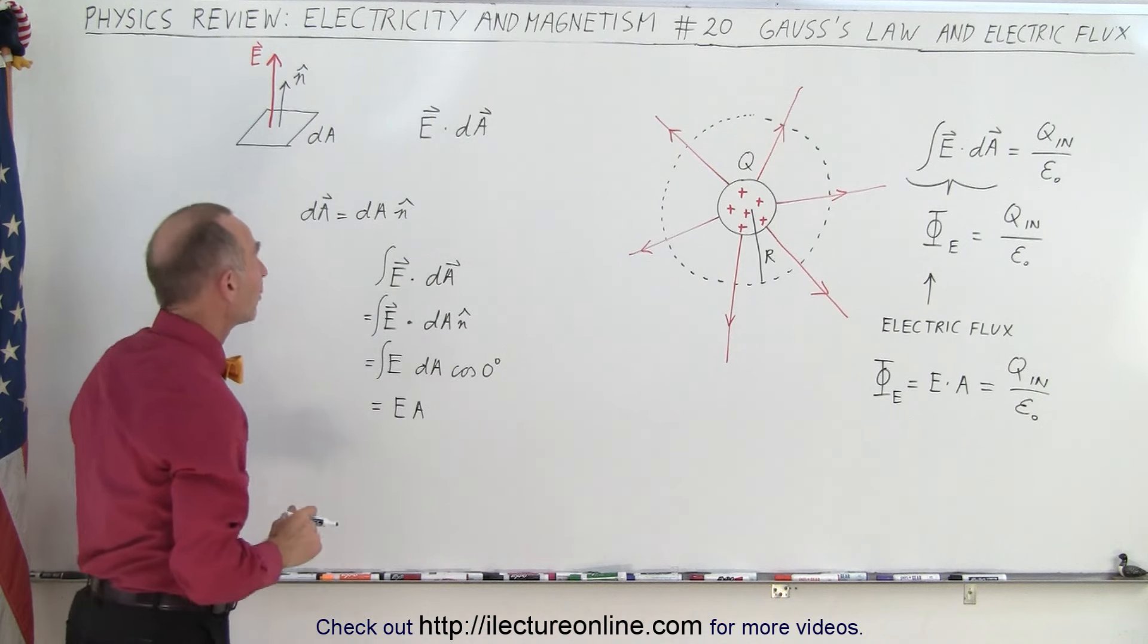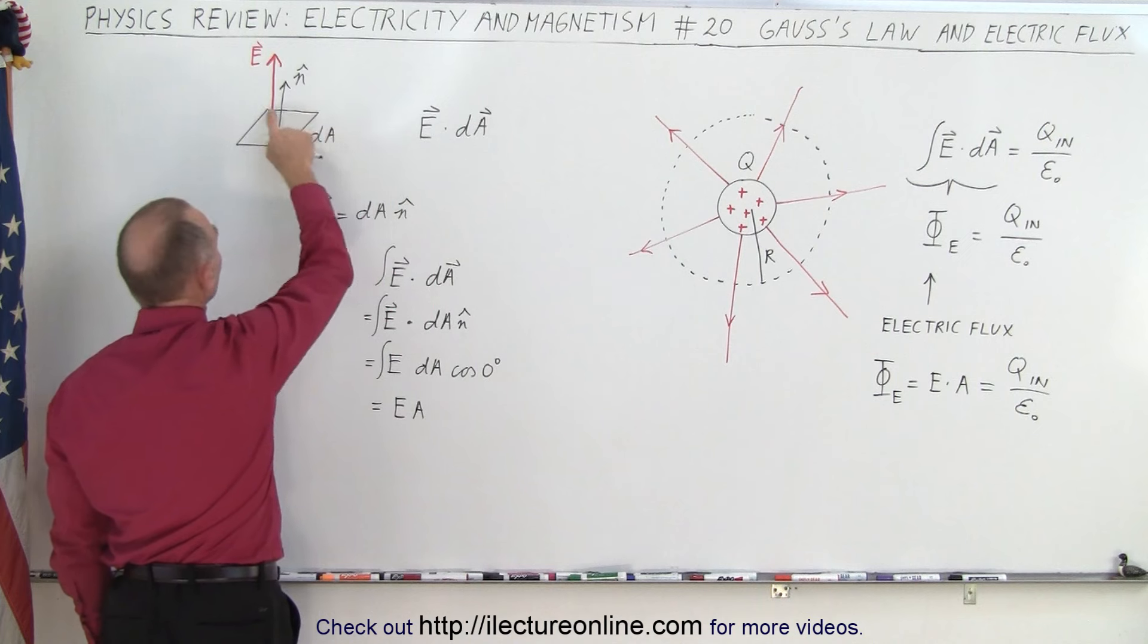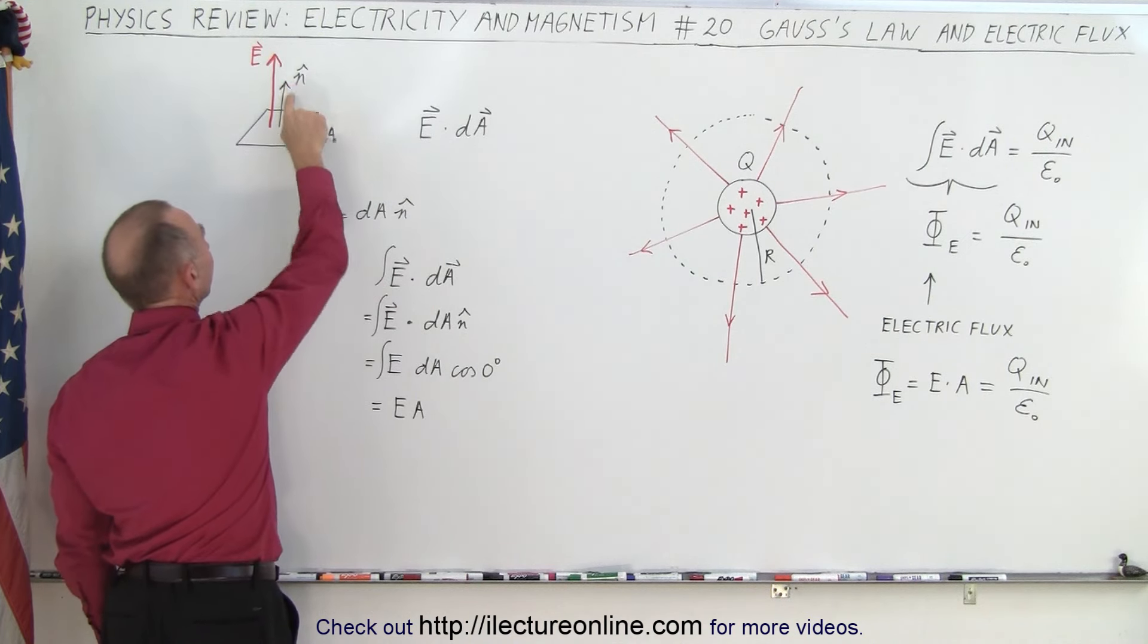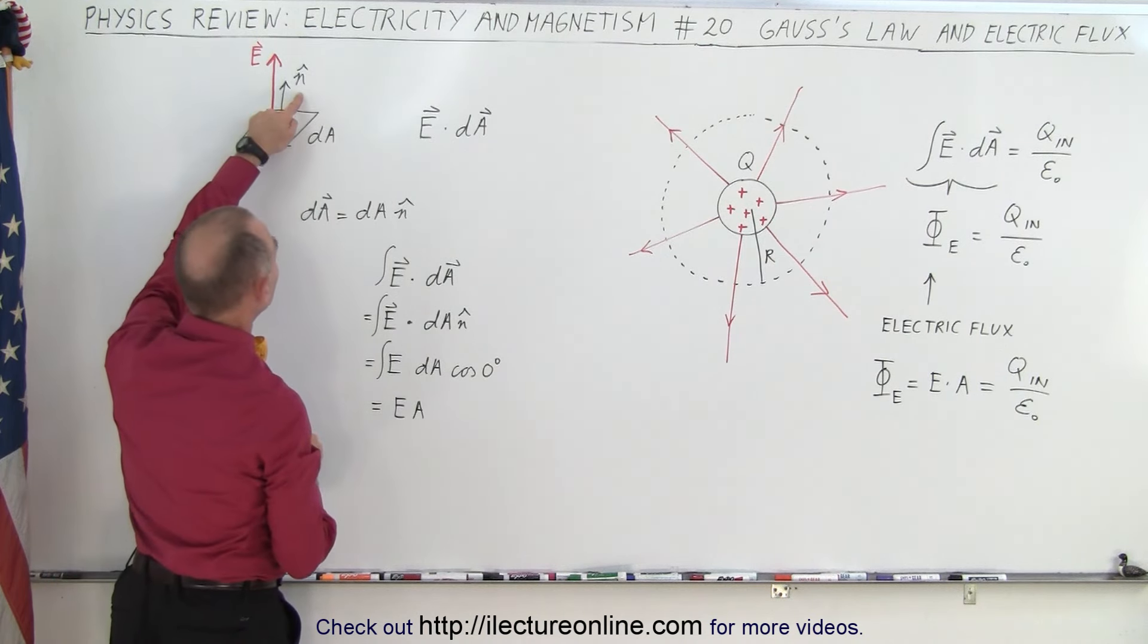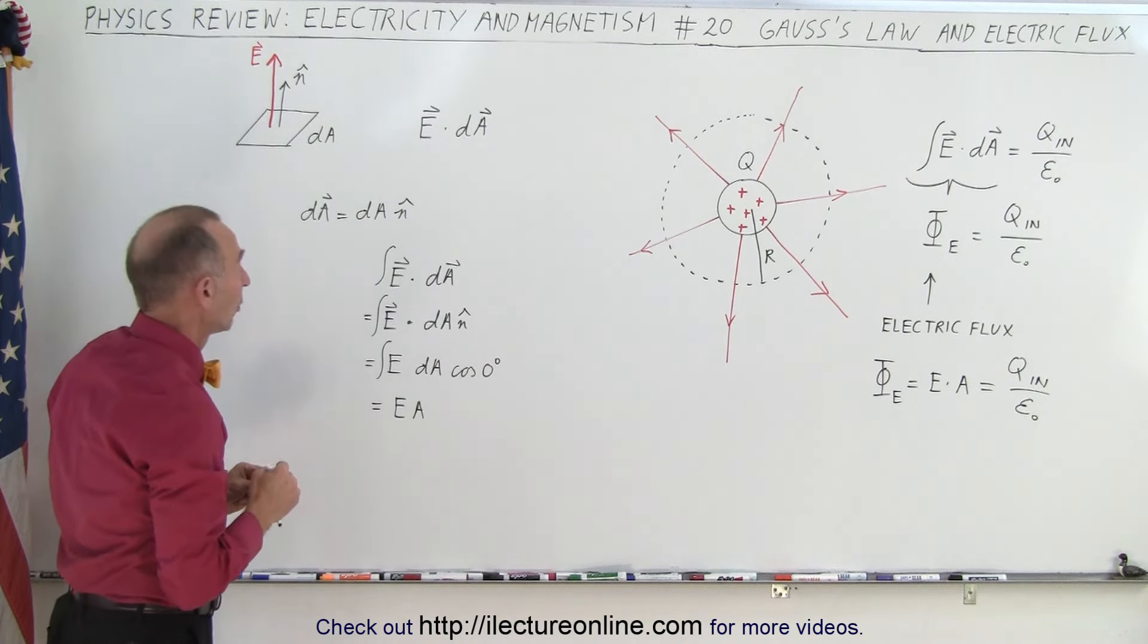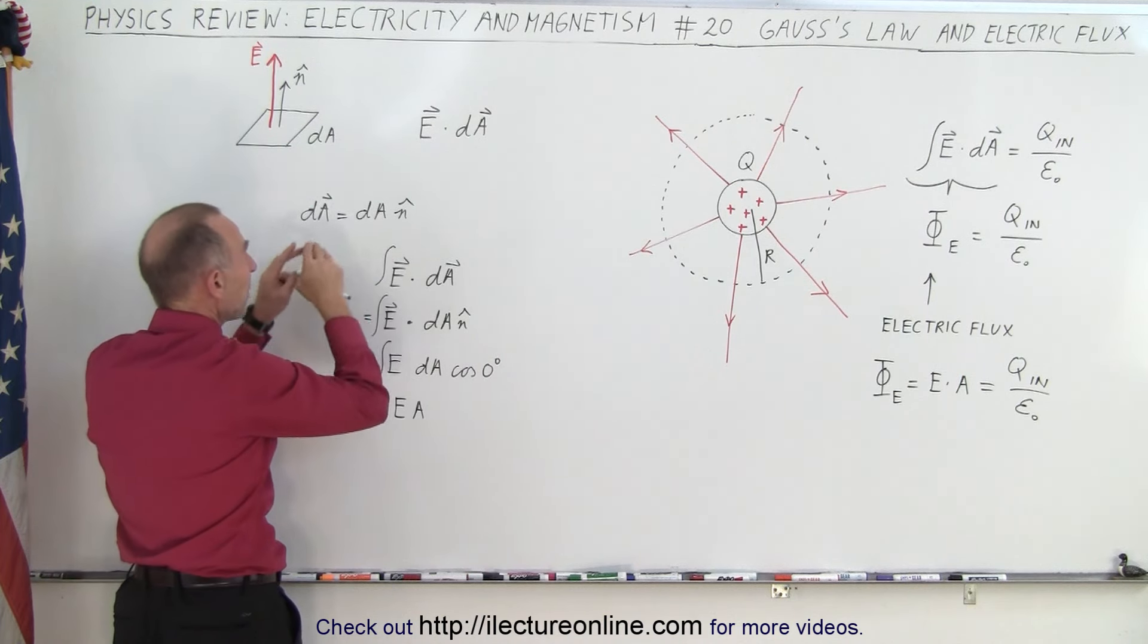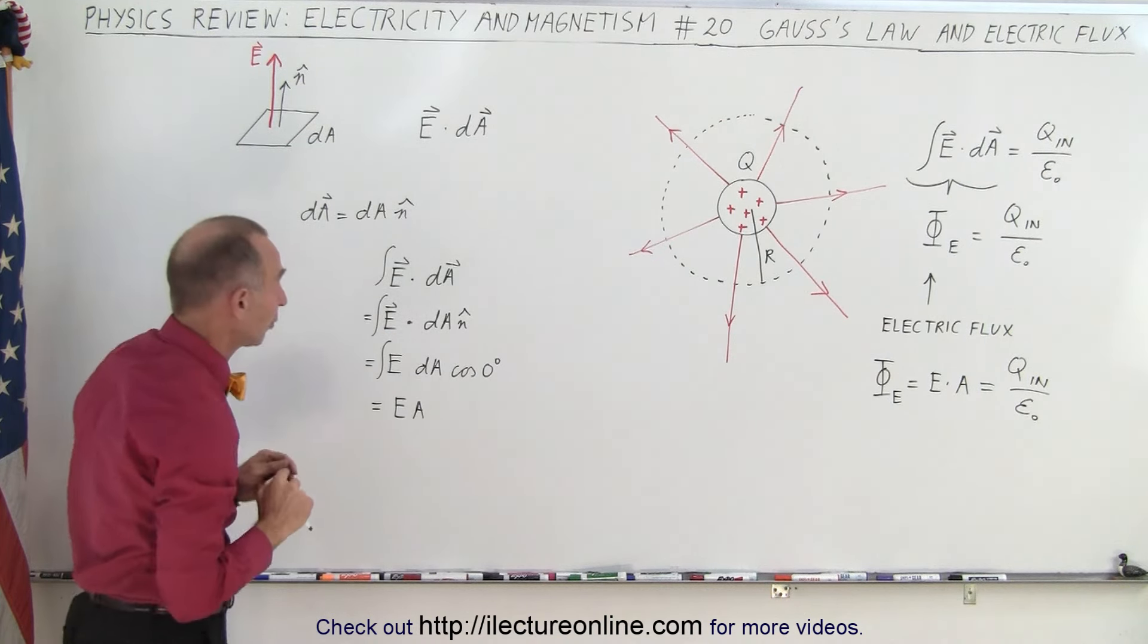Another thing we should do is clarify what we mean by E dot dA. If we have a small area element we call that dA, and then we have the normal vector, the unit vector that's perpendicular to the surface, which we call the n unit vector, and we have the electric field emanating perpendicular to the surface. So the area element dA as a vector quantity is equal to the magnitude of that area dA times the direction of the unit vector perpendicular to the surface.